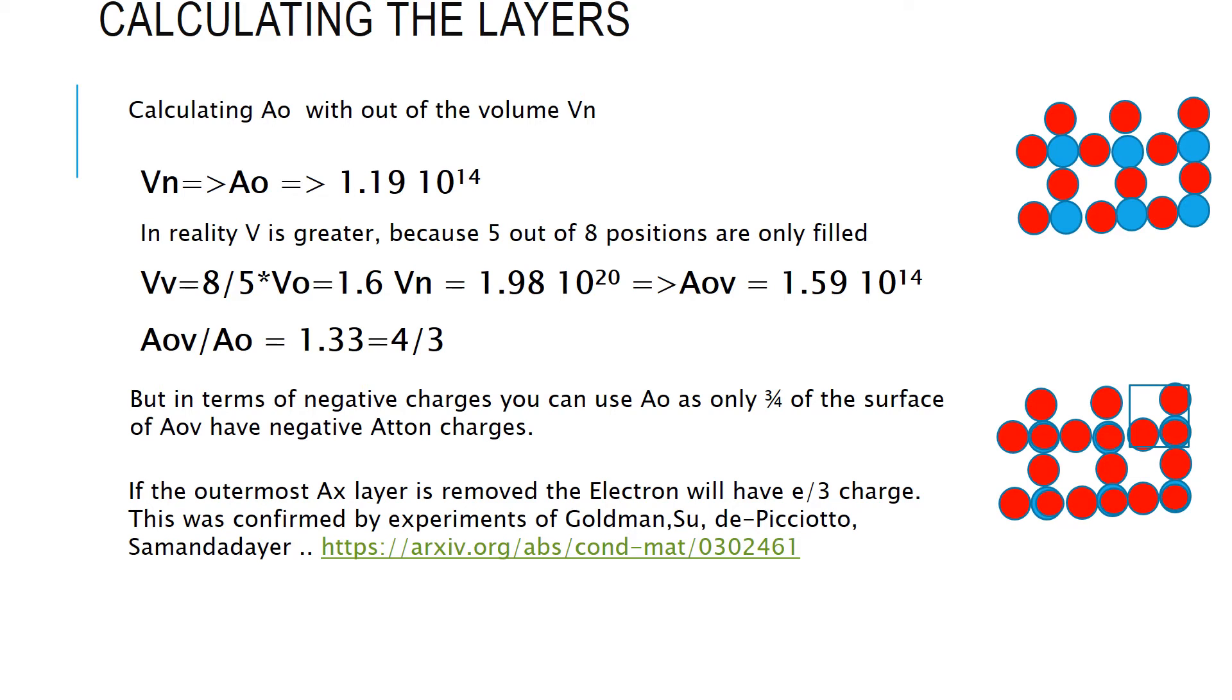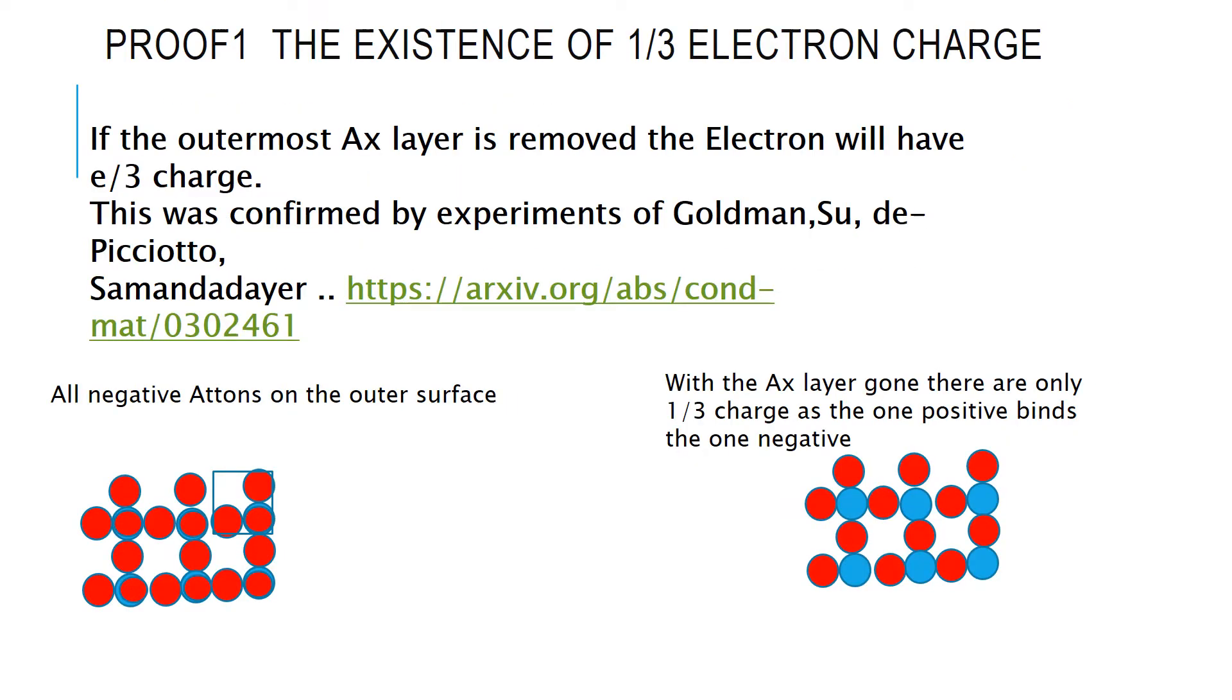This leads, actually, to the interesting one of the first proofs that this structure that I am describing here is correct, because the testing that was done to show that, under certain circumstances, the electron only has one-third of the electron charge. This experiment was done by Goldman-Sue and Picciotto. So, what is the reason for this is that, if you take the normal electron, three-quarters or three out of four positions are negative when you look at the surface of the electron. If you remove the AX, which is easily possible, and I'll get to that probably in the coming spin videos.